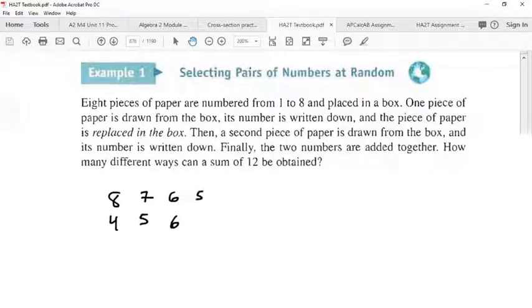Next number is 5, what would we have to add to that? 7. Next number is 4, and then it'd be 8. And then 3, but then we can't use 9, right? So these are the only ways that we can add to get 12. So how many total is that?